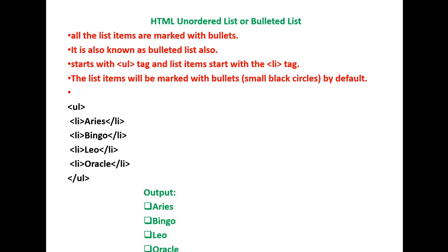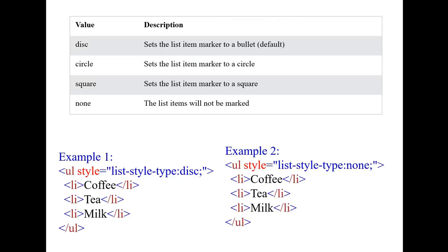The next tag is the unordered list. The unordered list is also known as the bulleted list. It starts with the UL tag and list items start with the LI tag. The list items will be marked with bullets — small black circles by default. Here the unordered list has items Aries, Bango, Leo, and Oracle. The output is displayed accordingly on the screen.